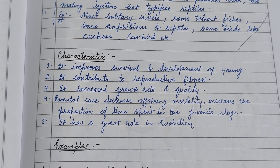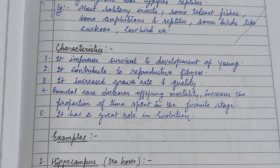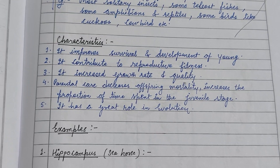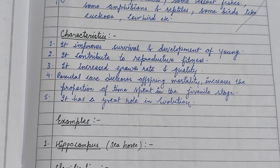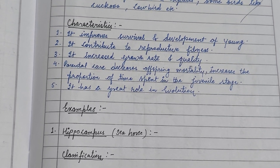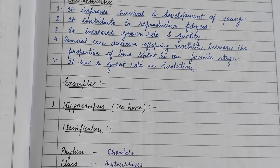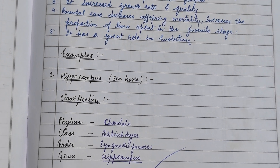Characteristics of parental care: it improves the survival and development of young ones, contributes to reproductive fitness, increases growth rate and quality, decreases offspring mortality, and increases the proportion of time spent in the juvenile stage. It also has a great role in the evolution process.